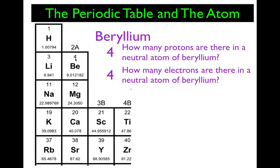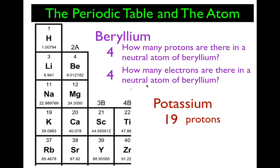Let's try the same thing for potassium. K is the symbol for potassium — in German they say kalium, which is where that symbol comes from. How many protons are there in a neutral atom of potassium? The atomic number is 19, so it has 19 protons. How many electrons are there in a neutral atom of potassium? Since it's neutral, the number of protons and electrons must be the same, so it also has 19 electrons.